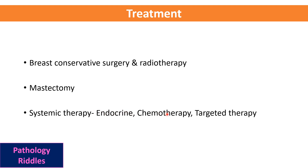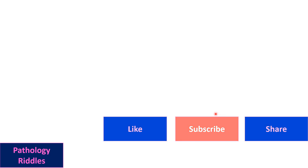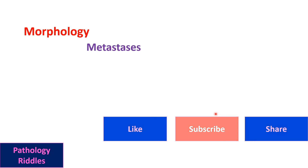Treatment can include breast-conserving surgery with radiotherapy, or mastectomy, along with systemic therapy including endocrine therapy, chemotherapy, and targeted therapies. Today we discussed morphology, metastasis, prognosis, and treatment of breast carcinoma. If you have any doubts, please write in the comments below. This is Dr. Bismay signing out.